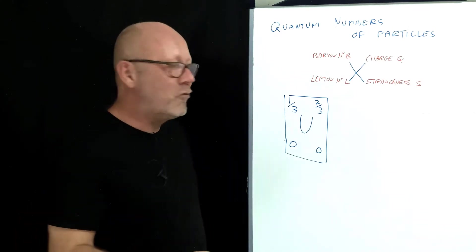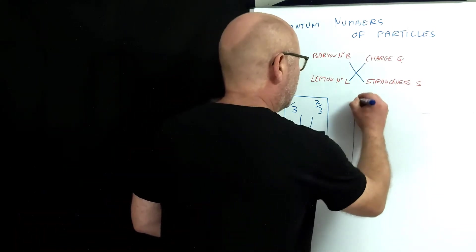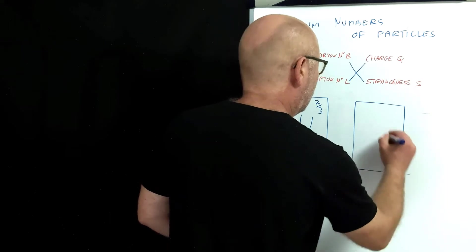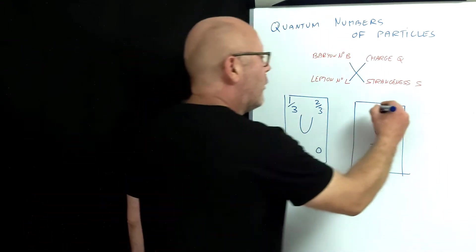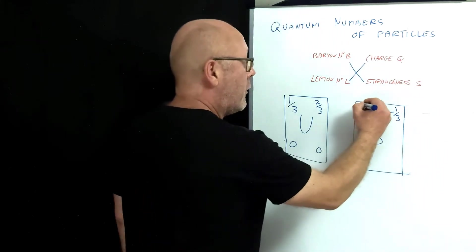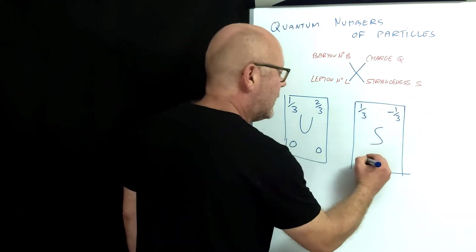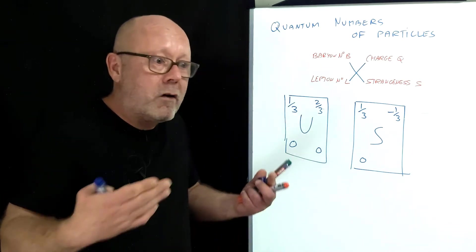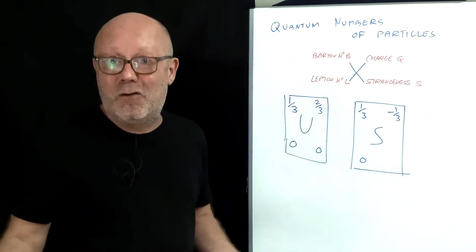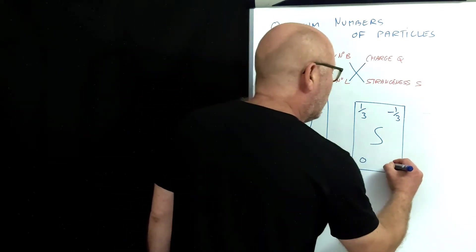Let's consider now the strange quark. It has a charge minus one-third of the elementary charge. It is a third of a baryon, but it's not a lepton. A strange quark has got a strange quark character. It's a strange quark, so its strangeness is minus one.